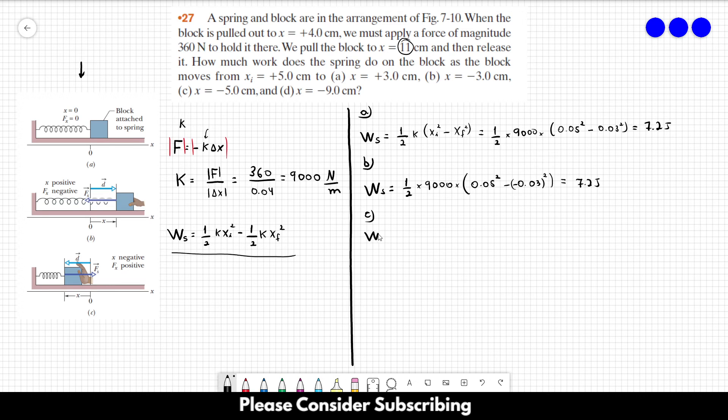For part C, again the same thing: 1/2 × 9000 × (0.05² - 0.05²). You can see this equals zero, since the terms cancel out.